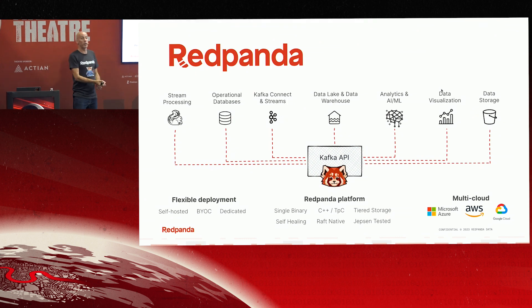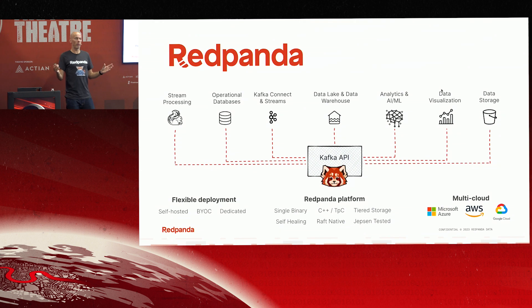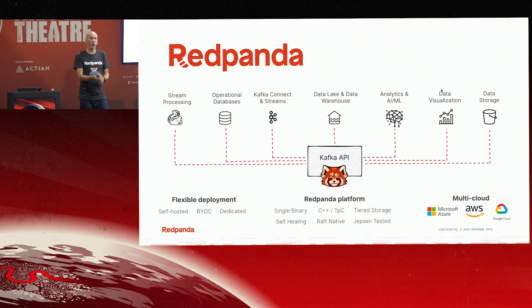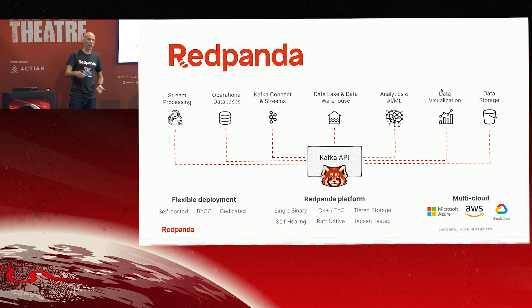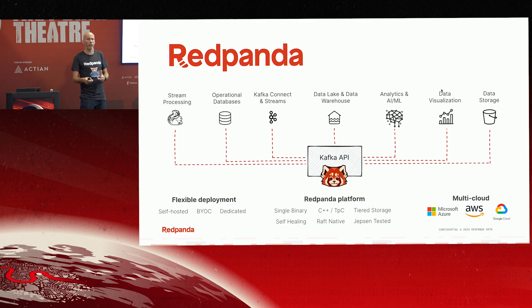Red Panda also has tiered storage built in, so you can back your topics with S3 or ADLS, meaning you don't need to size your cluster based on expensive disks — you size it based on performance. The performance of Red Panda is an order of magnitude quicker than Apache Kafka because there's no Java, no garbage collection, no Zookeeper, none of the things that make Kafka hard to run and manage.